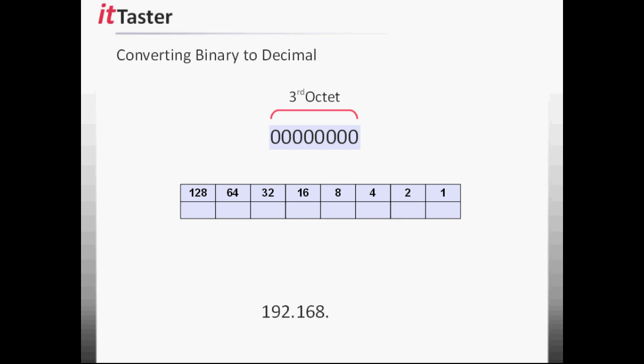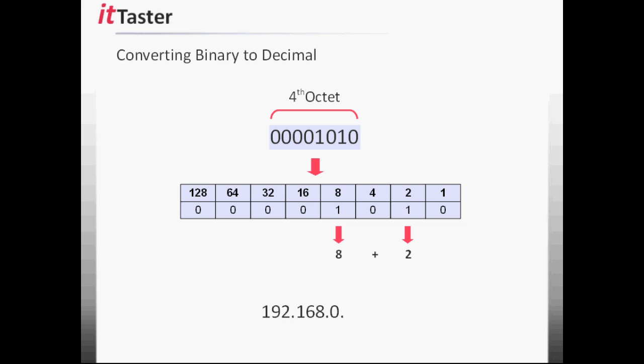The third octet is an easy one to convert. All of the bits are set to off — zeros — which is also zero in decimal. And finally the fourth octet: we transfer the 8 bits to the binary table and add together the values of each bit that is set to on, which is 8 plus 2, which equals 10 — the value of the fourth octet in decimal.